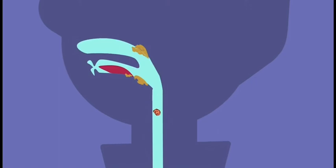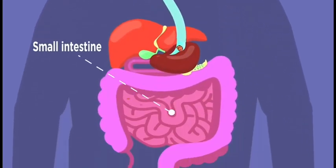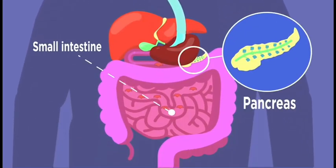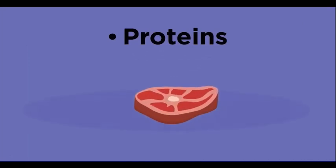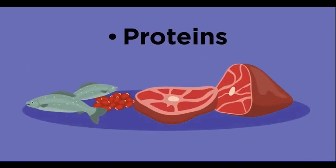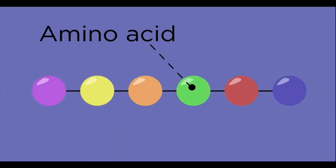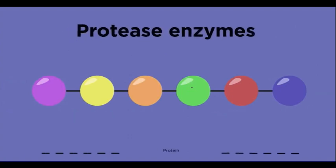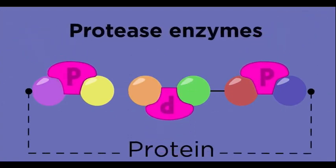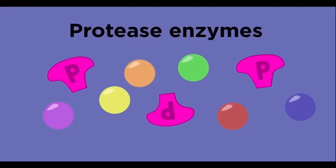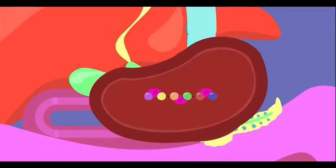Second, proteins. The enzyme name is protease. When protein reaches your stomach, hydrochloric acid and an enzyme called protease break it down into smaller chains of amino acids.